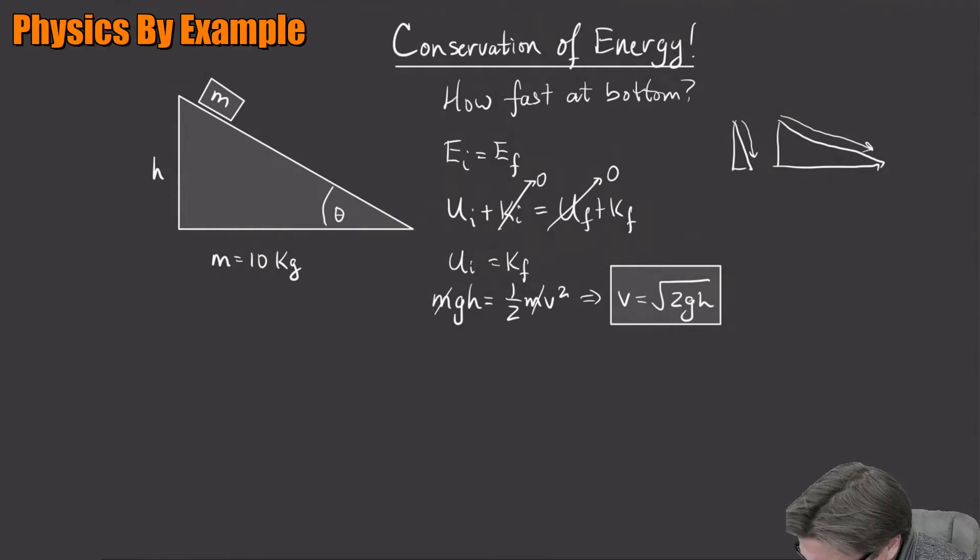So in this case, if h is like 5 meters - if you fall from a height of 5 meters - it could be just falling straight down. What is that? Your speed is going to be... what's 2 times g? That's 20 times 5 is 100, square root of 100 is 10.